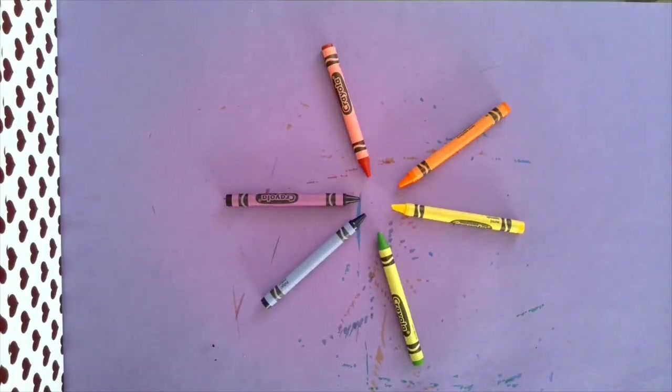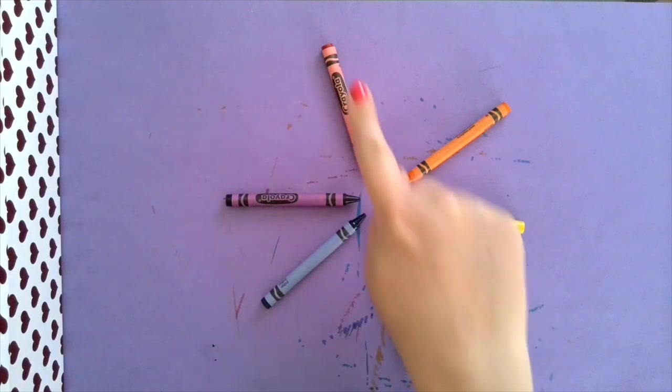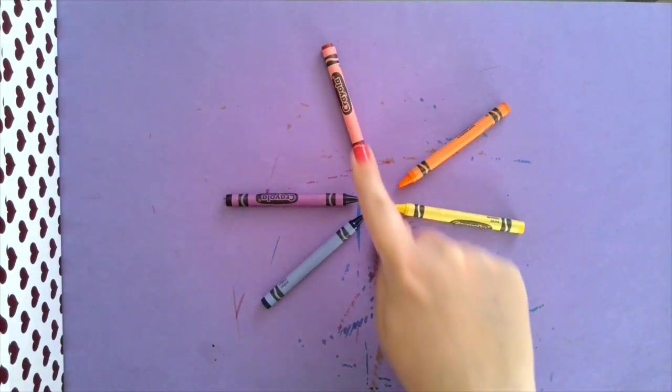Hey guys, today for our lesson we are going to learn about complementary colors. Complementary colors are colors that are across from one another on the color wheel.